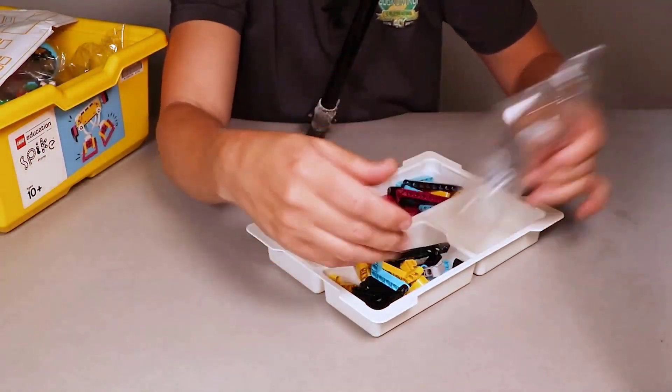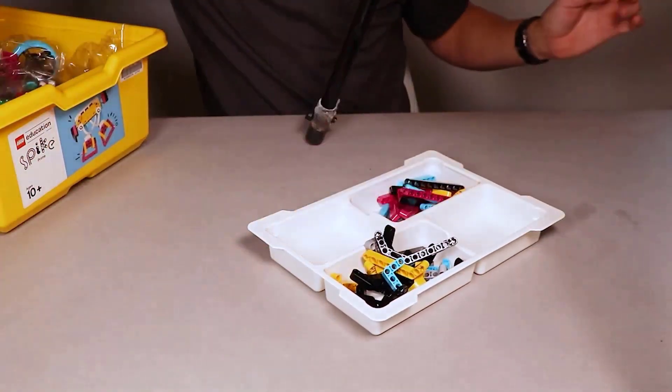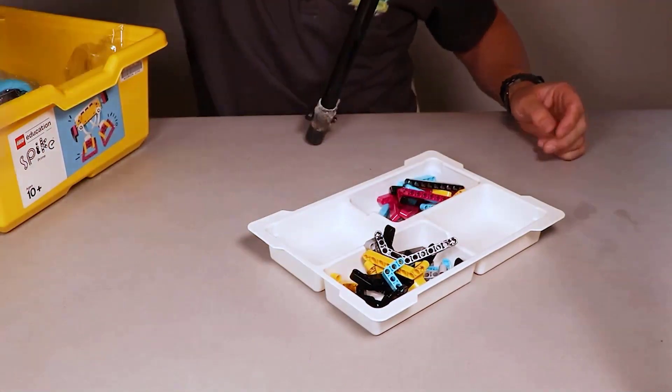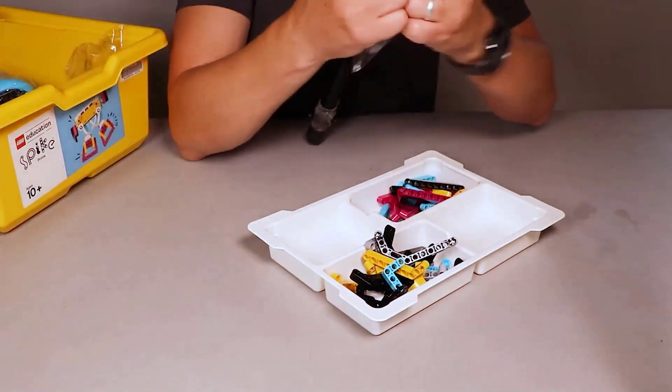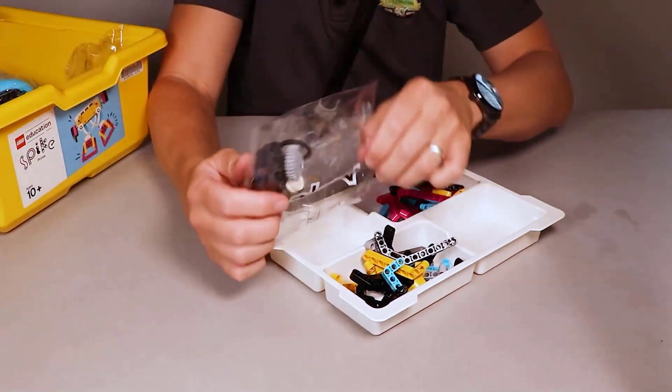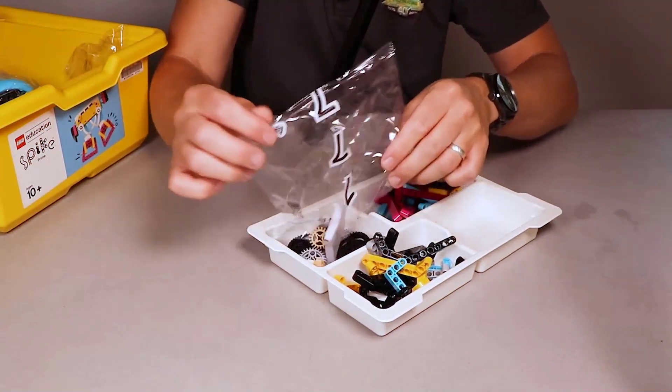And then we have our connector pieces, bag five. These are usually our beams that have some sort of shape in them. Now we have a bag full of gears.